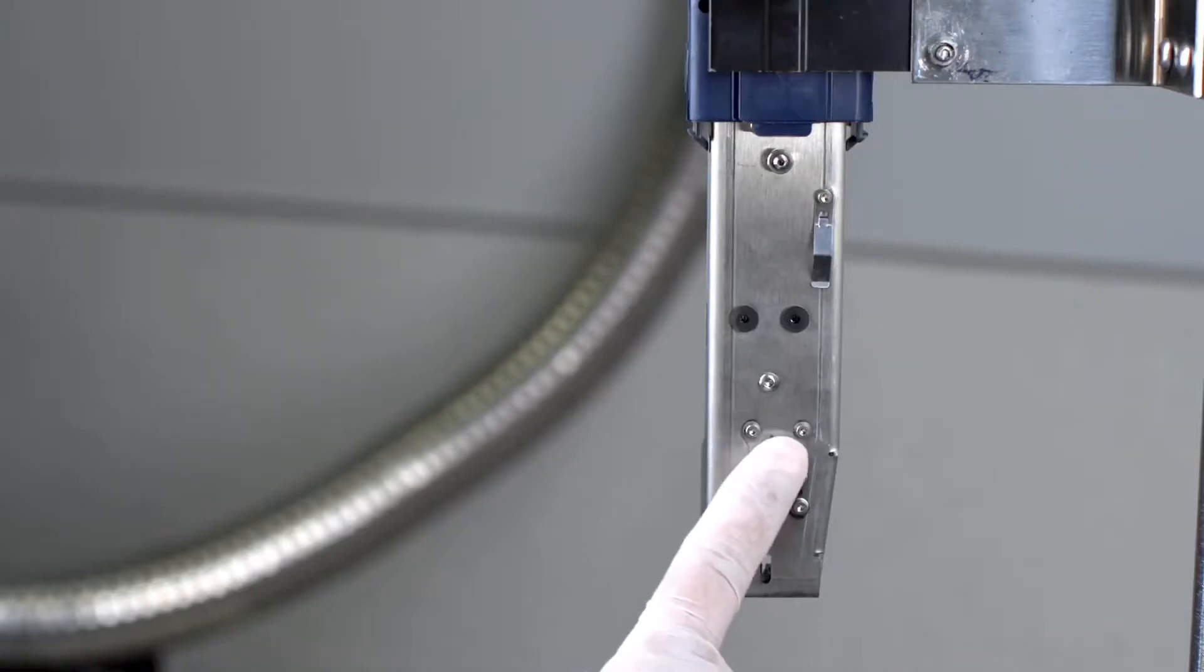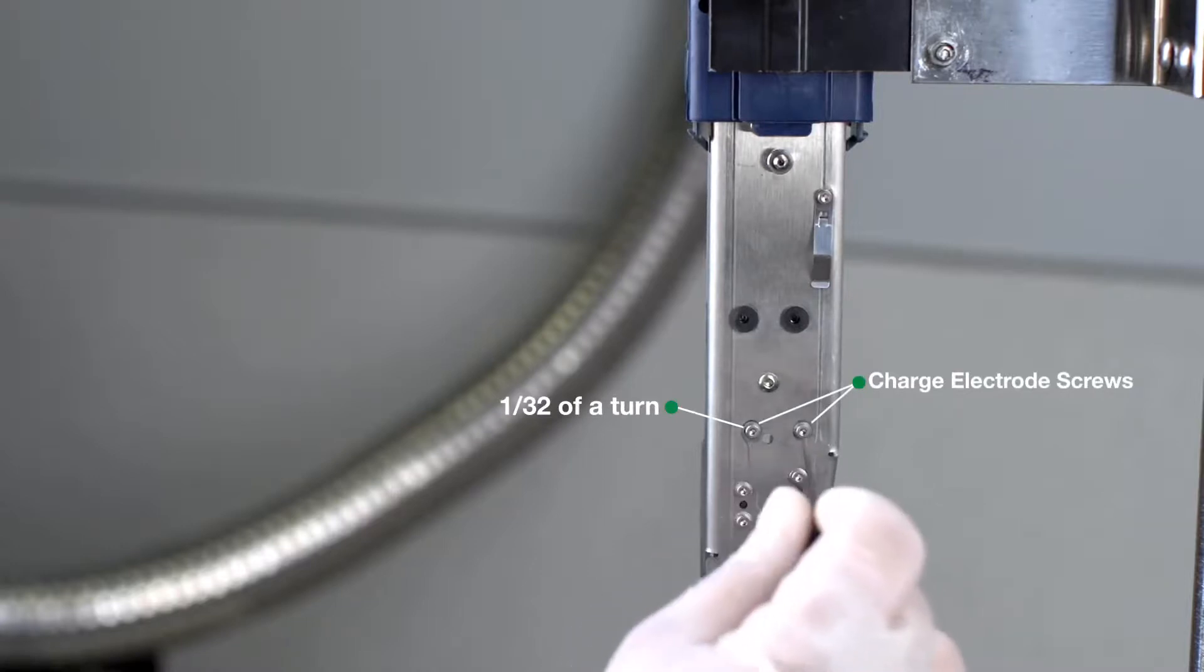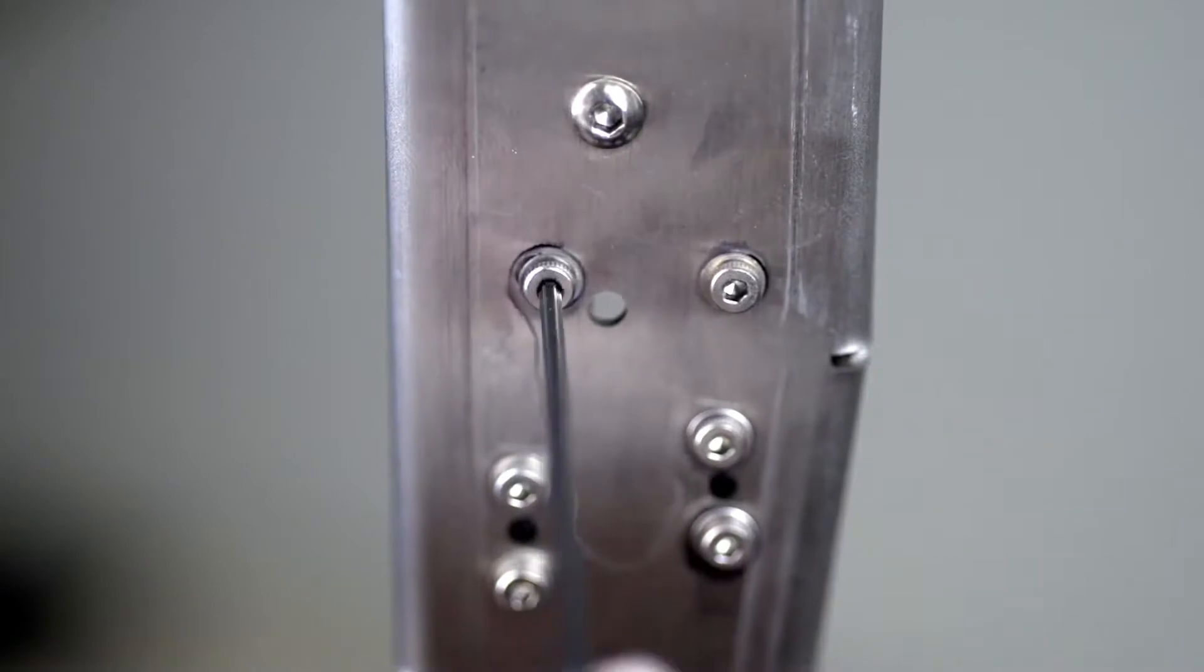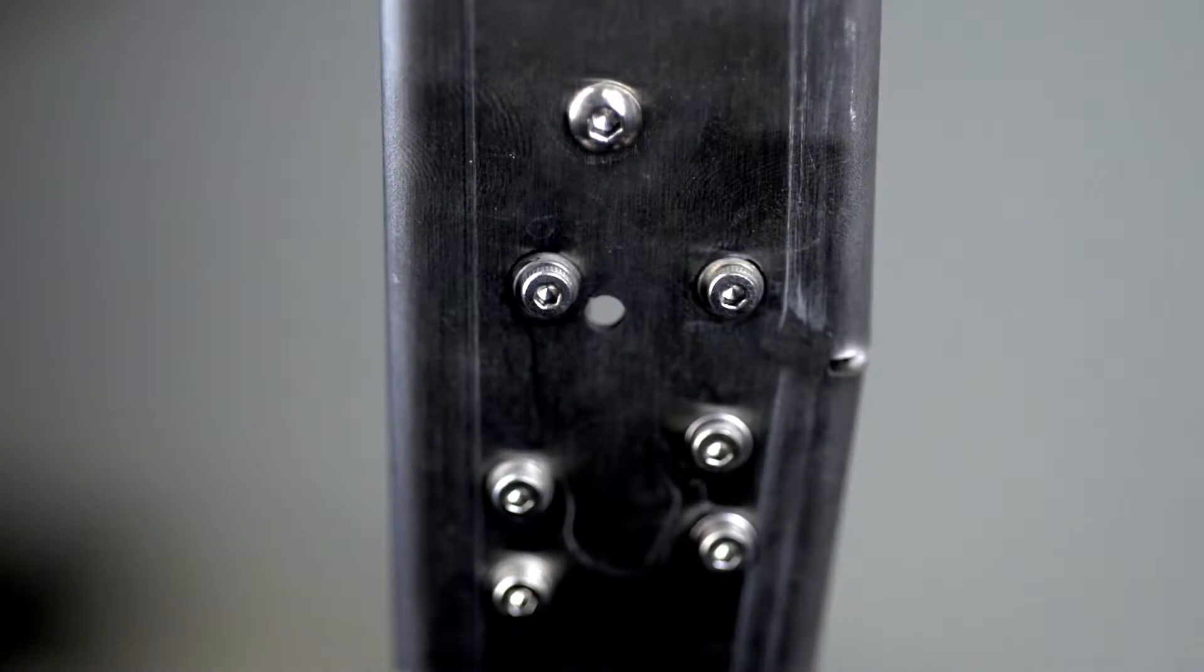Next, loosen the two charge electrode screws located on the back of the unit by turning them 1/32nd of a turn. These screws need to be loose enough to allow for adjustment, yet tight enough to hold the charge electrode in place.